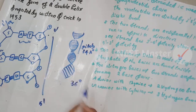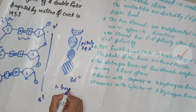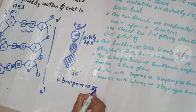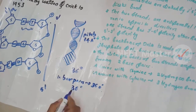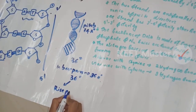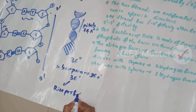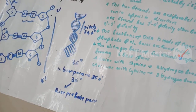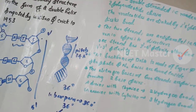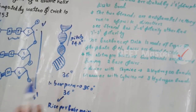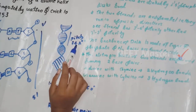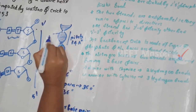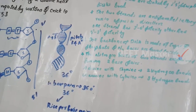Each turn consists of 10 base pairs at 360 degrees total, giving 36 degrees rise per base pair. The rise per base pair is 3.4 angstroms. So if you have 10 base pairs, the pitch is 34 angstroms, and the rise per base pair is 3.4 angstroms.